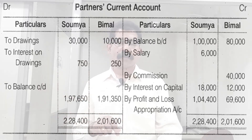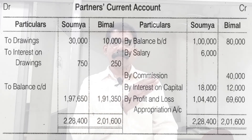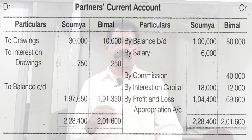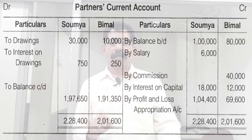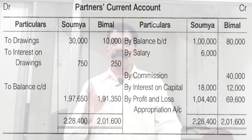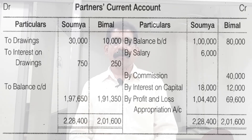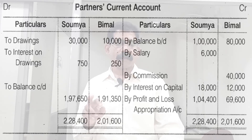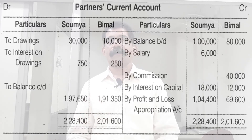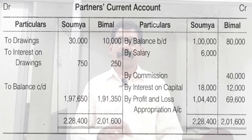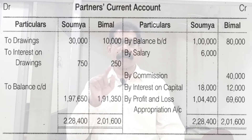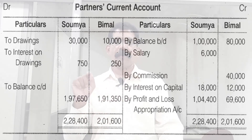Coming to the debit side: drawings. The drawings of Soumya and Bimel for the year were Rs. 30,000 and Rs. 10,000 respectively. Both partners have drawings. Write: to drawings — Soumya 30,000, Bimel 10,000.